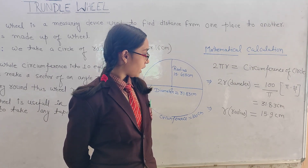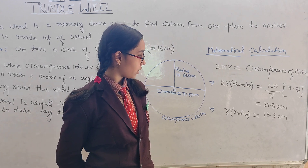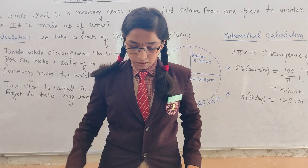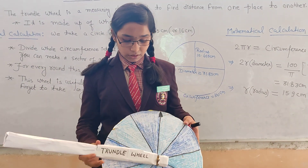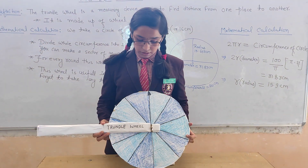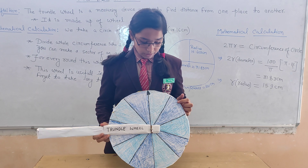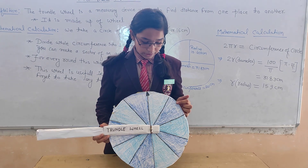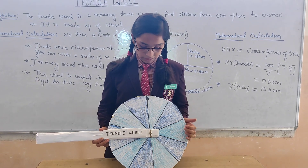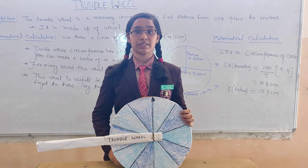And by this, we get r, the radius of the circle, as 15.9 cm. The circumference of the circle is divided into 10 equal parts, known as sectors. Each sector is of 36 degrees.